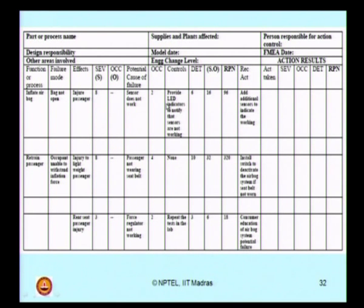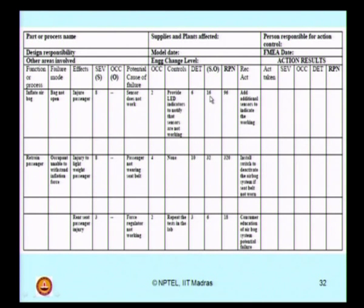The driver or passenger will understand that the airbag functioning is not effective. The detection can be 6 on a 10-point scale, because once you provide an LED, the driver can easily understand well in advance before he starts the car that his airbag system is not effectively in position. So detection can be 6 out of 10. Severity into occurrence into detection gives an RPN number of 96.